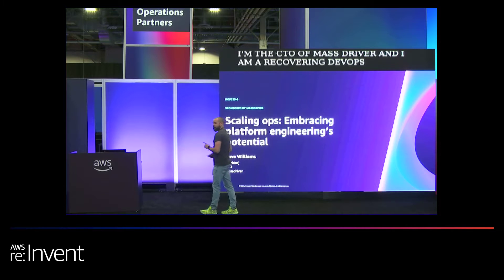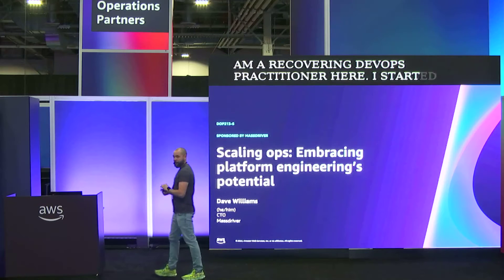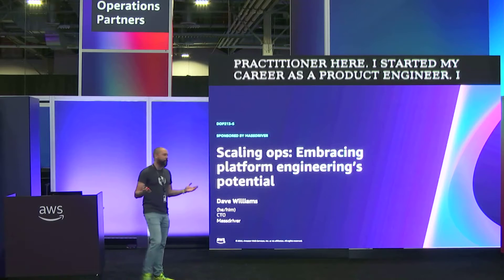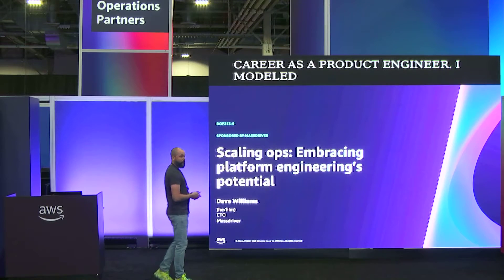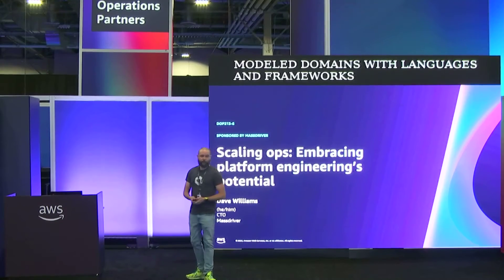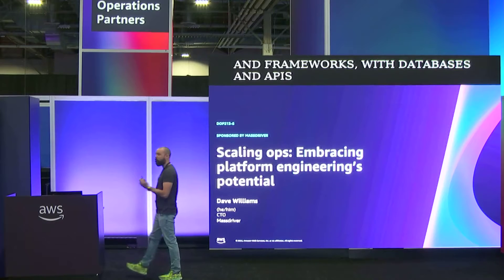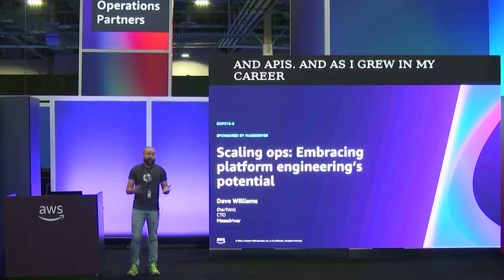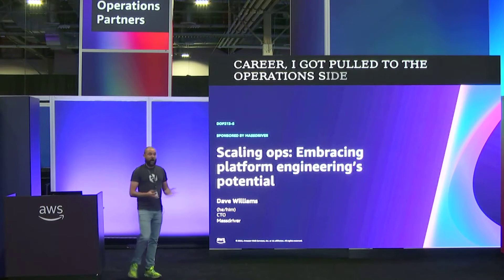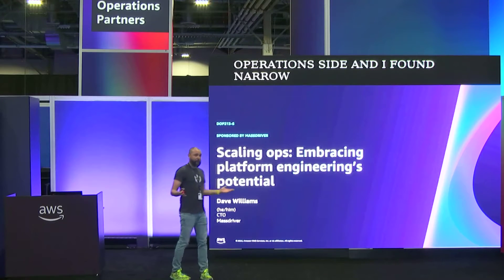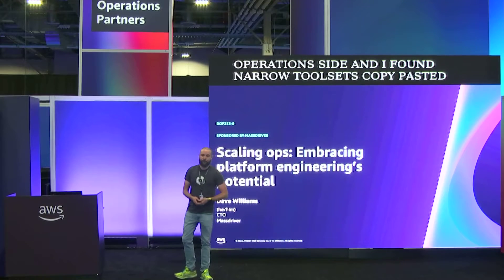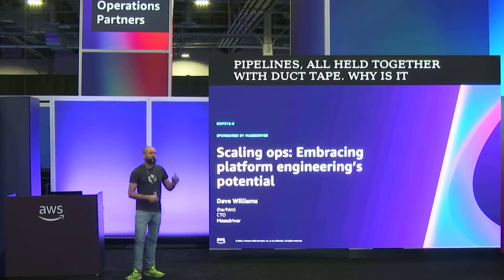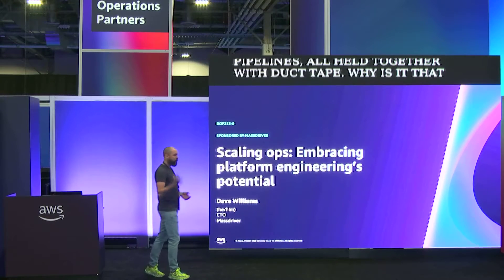I started my career as a product engineer. I modeled domains with languages and frameworks, with databases and APIs, and as I grew in my career, I got pulled to the operations side and I found narrow tool sets, copy-pasted pipelines, all held together with duct tape. Why is it that when we build the engine for our business, we throw out all those product tools?